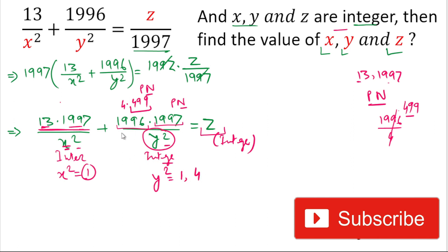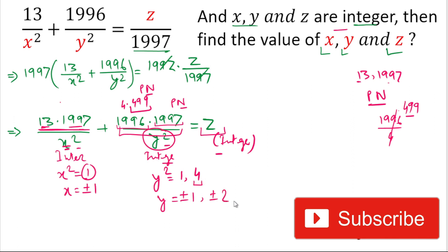For x² = 1, the value of x is equal to ±1. Likewise the value of y will be either ±1, and for y² = 4, the value of y will be ±2. So here we have four values of y and two values of x. Now for calculating the value of x, y, and z, we'll put those values into the equation.